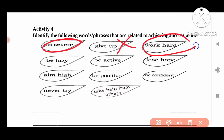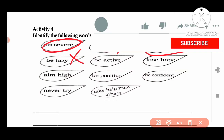'Hard work' — this is related to achieving success in our life. If we do the hard work, we make a success in our life. 'Be lazy' — this is not related to achieving success, because if we are lazy we do not do hard work, so we do not reach success.